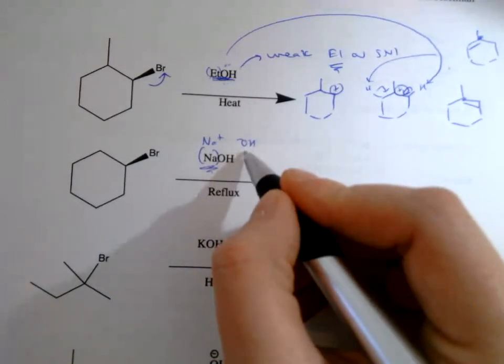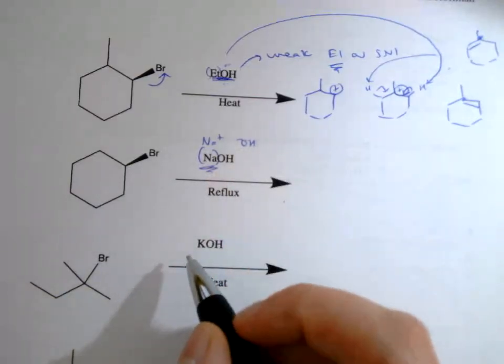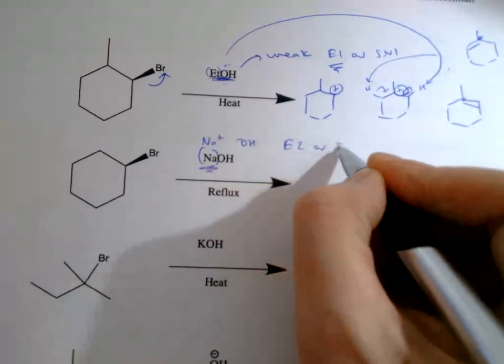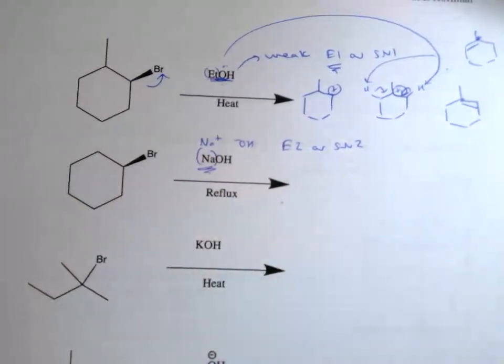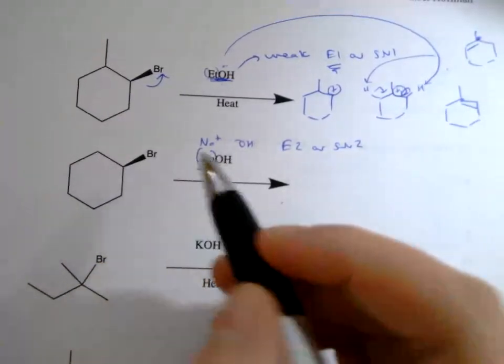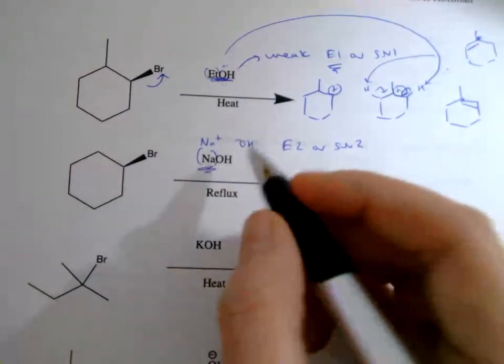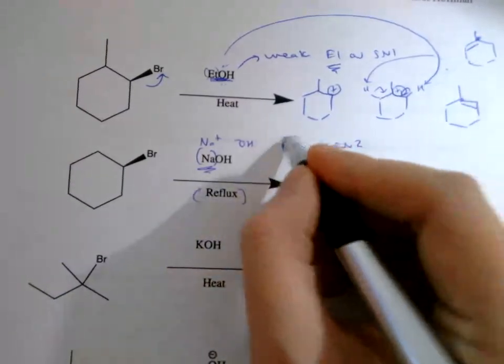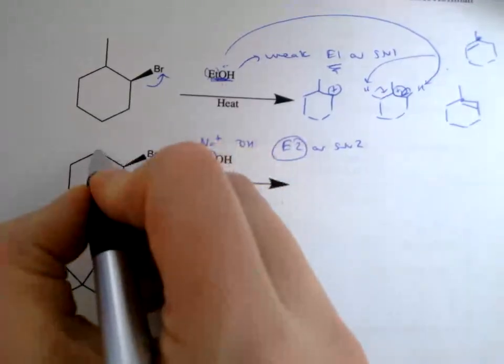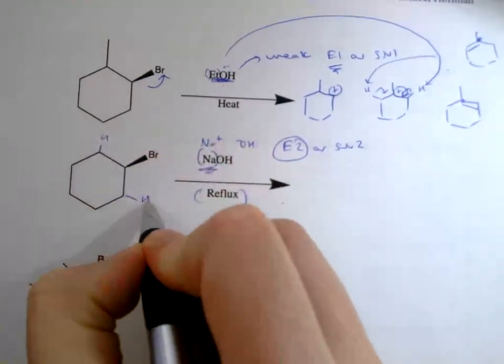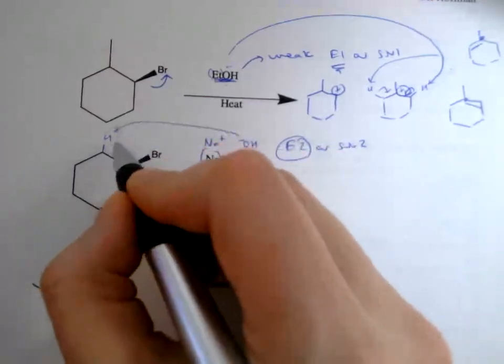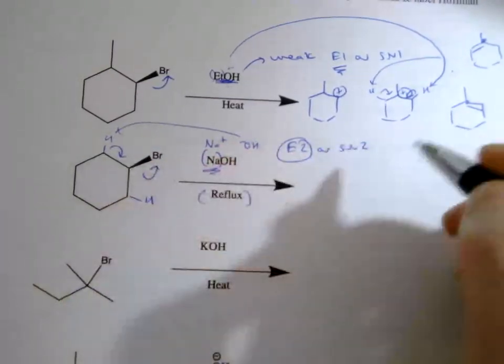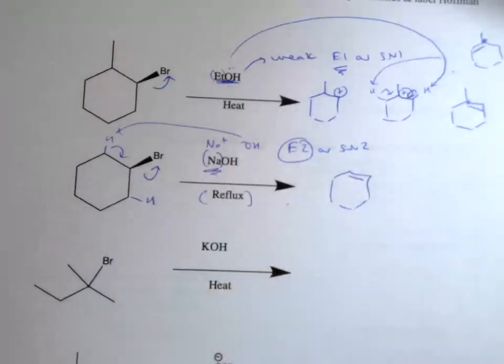With OH minus, that means we're going to get E2 or SN2. It's a secondary nucleophile, so it can go either SN2 or E2, but the heat for reflux favors E2 over SN2, so it's going to take one of these hydrogens here.